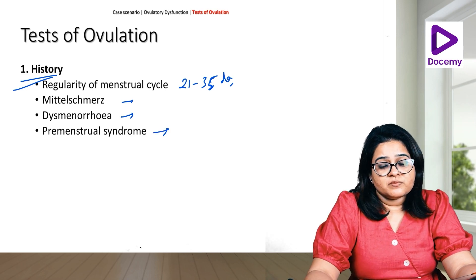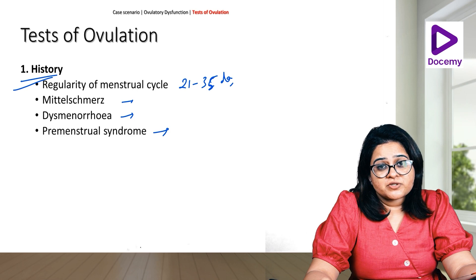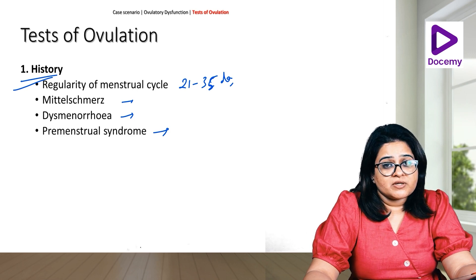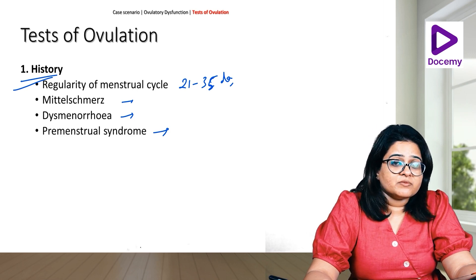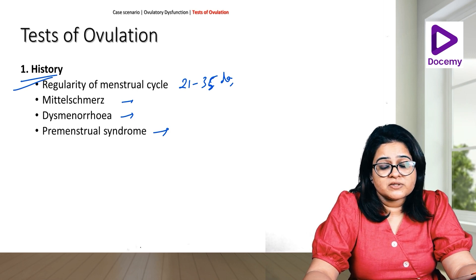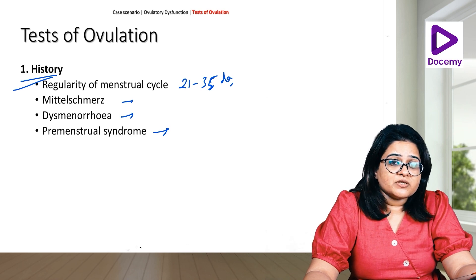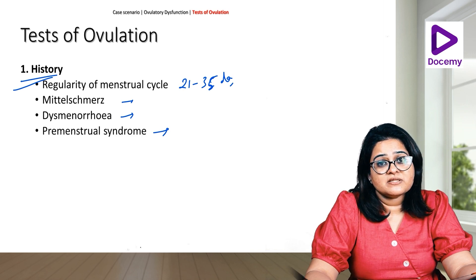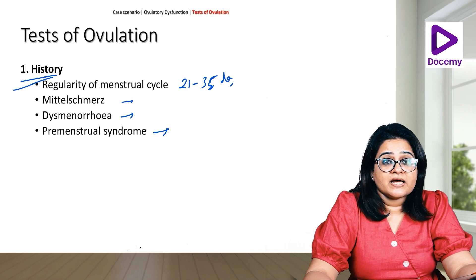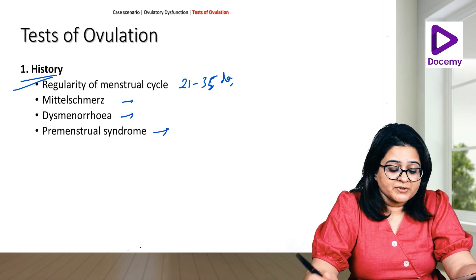Premenstrual syndrome, or PMS, is usually because of the progesterone component in the luteal phase. She may have bloating, headaches, or mood disturbances. These are all symptoms of premenstrual syndrome and are again indicative of a luteal phase, meaning ovulation has happened.